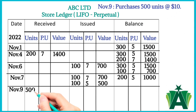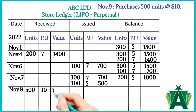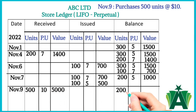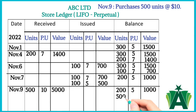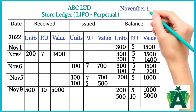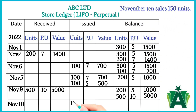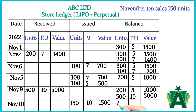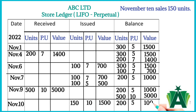November 9th: purchases of 500 units at $10 per unit. These 500 units are recorded in the received column at $10 per unit, with a total value of $5,000. In the balance column, 200 units at $5 per unit ($1,000) are recorded first, then 500 units at $10 per unit ($5,000). November 10th: sales of 150 units. The 150 units are issued from the 500 units at $10 per unit, totaling $1,500. The balance column shows 200 units at $5 per unit ($1,000) and the remaining 350 units at $10 per unit ($3,500).